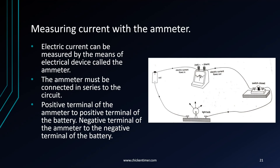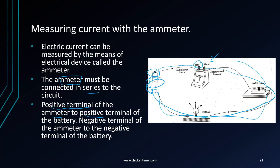This is the setup in a circuit diagram. You measure current using the ammeter, and the ammeter must be connected in series. When connected in series, you have a closed loop. The positive terminal of the ammeter is connected to the positive terminal of the battery, and the negative terminal of the ammeter is connected to the negative terminal. The switch controls the on and off of current.